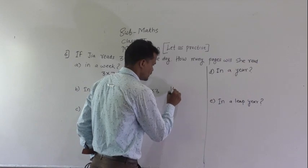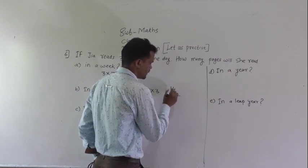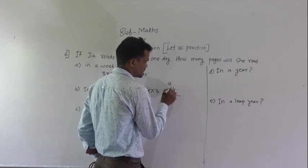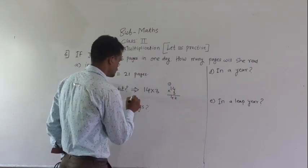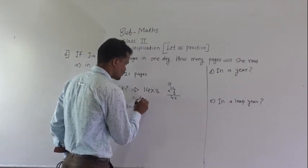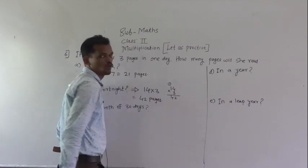14 into 3. 3 fours are 12, 1 carry. 3 ones are 3, 3 plus 1, 4. So she will read 42 pages in a fortnight.